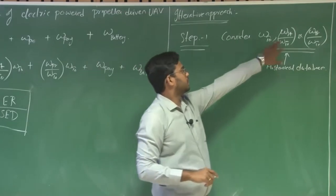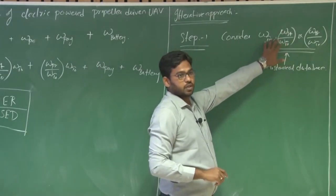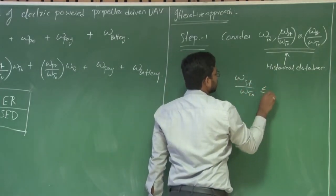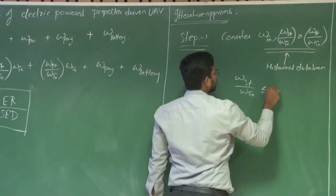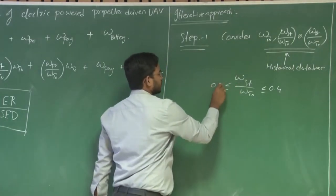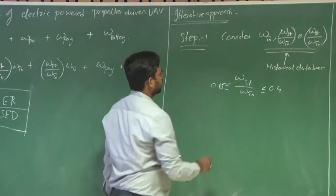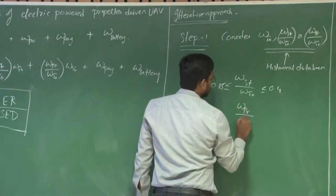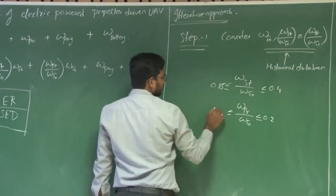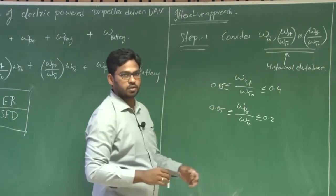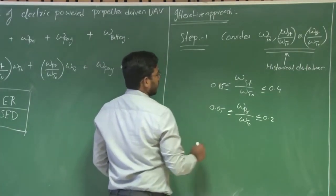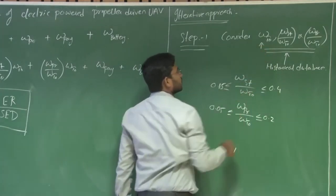Typical values for a fixed wing UAV: the ratio of structural weight to takeoff weight ranges from 0.15 to 0.4. And typical values of propulsion to takeoff weight: 0.05 to 0.2 — that is 5 to 20 percent of the overall takeoff weight. You also consider the input of this overall takeoff weight.